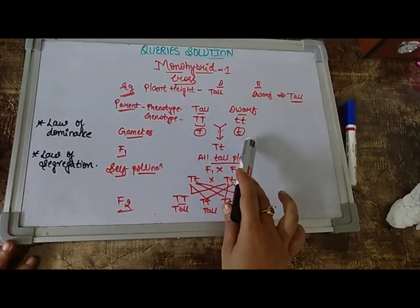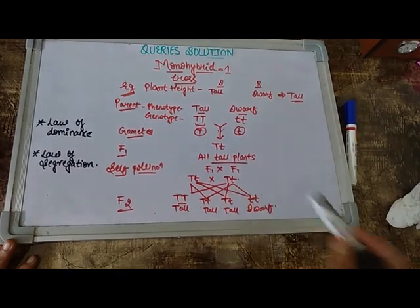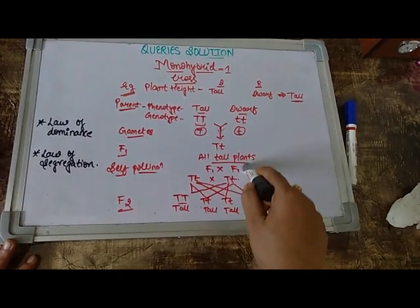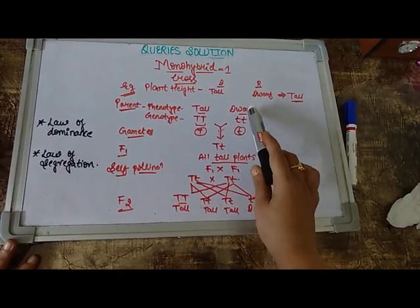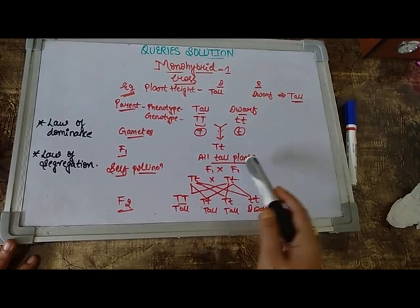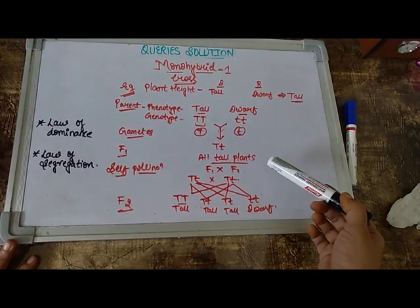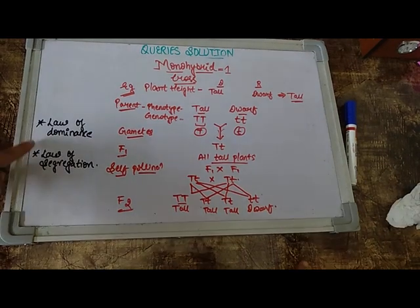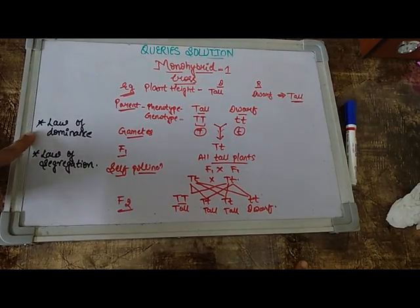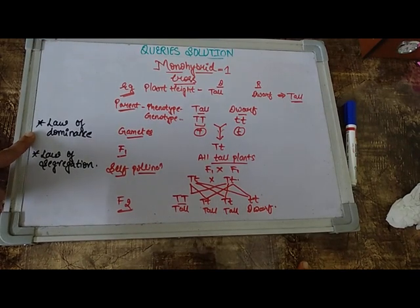That when a cross will be made between two different varieties of trait, the trait which will be dominating will be able to express itself and the one which is recessive will not express itself. But yes, eventually it will be expressed in the F2 generation but not in the F1. So that was all about the law of dominance. That the dominating will express, recessive will not express or it will get suppressed in the presence of dominating.